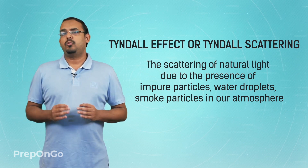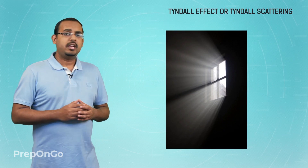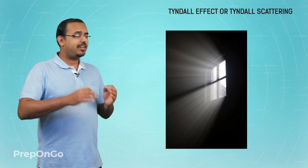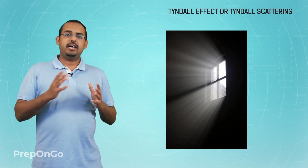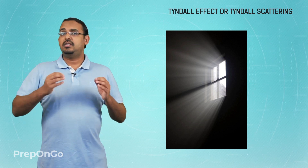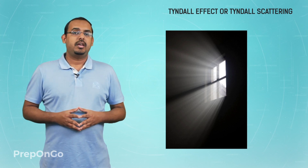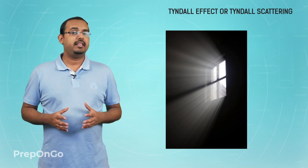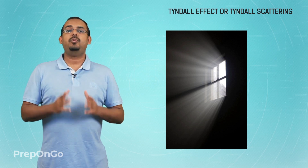Most of you must have observed a phenomenon similar to the one shown here. Early in the morning when dusting is happening at your homes, you must have observed a similar phenomenon. Due to dusting, dust particles get suspended in the air, and these dust particles cause scattering of the light coming from the window. Due to this scattering, the dust particles suspended in the air become visible to us, which in turn makes the path of the light visible to us.